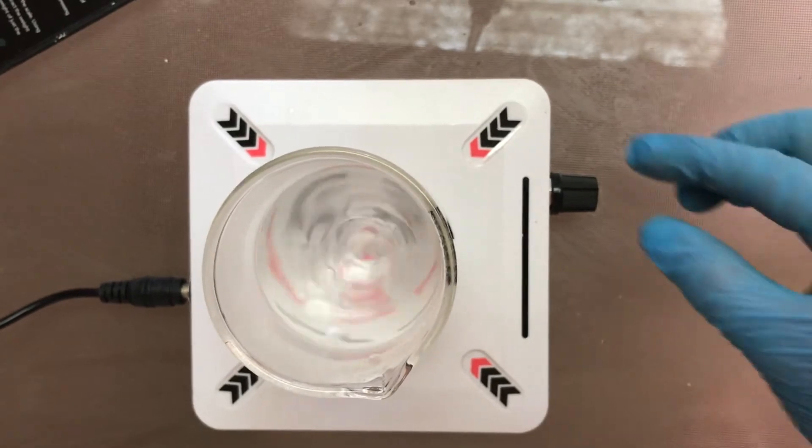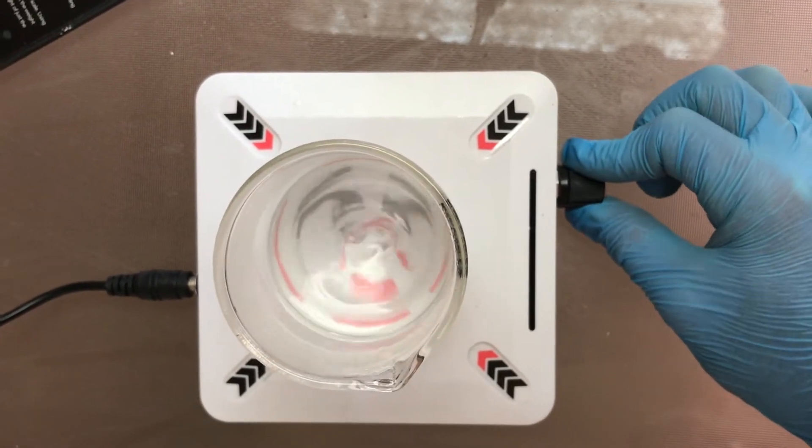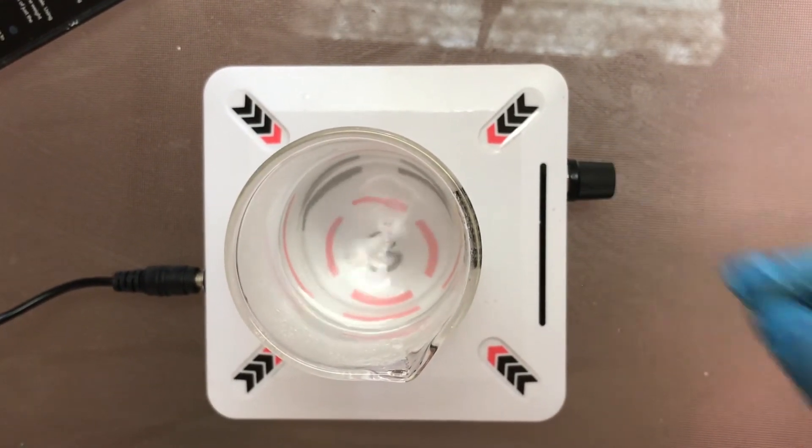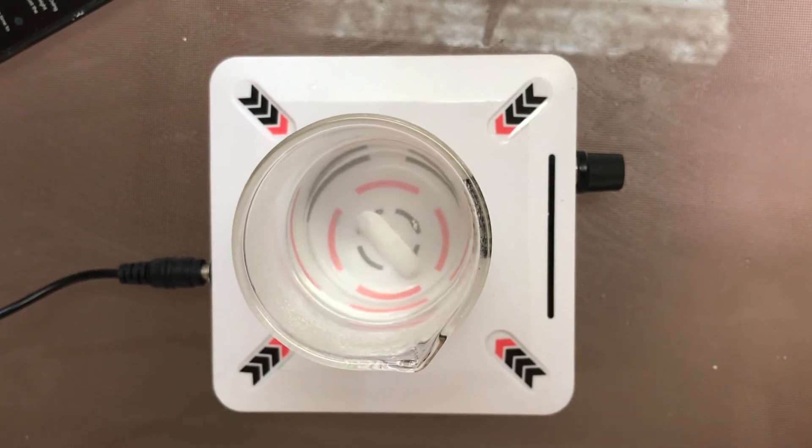Continue stirring until the sodium hydroxide is dissolved. The liquid will become transparent. Once it is transparent, turn off the stirrer.